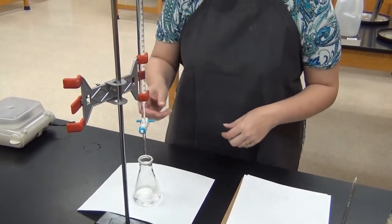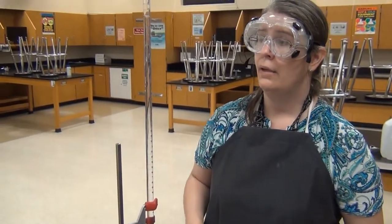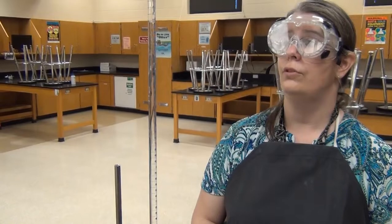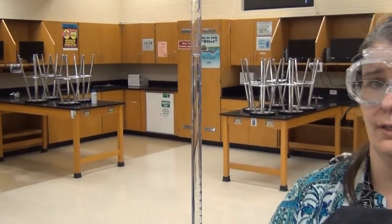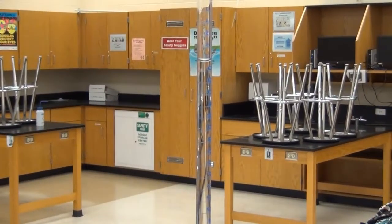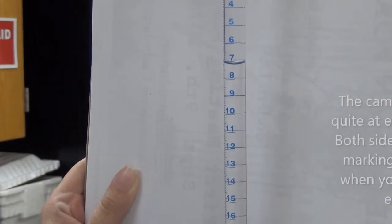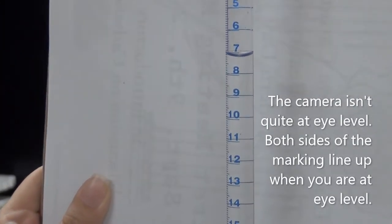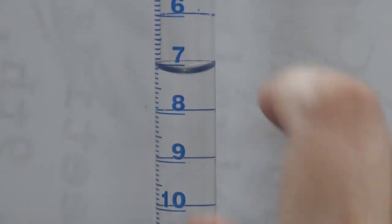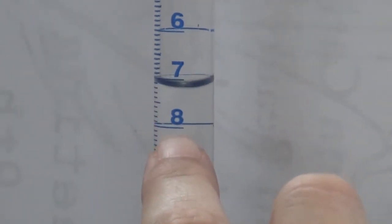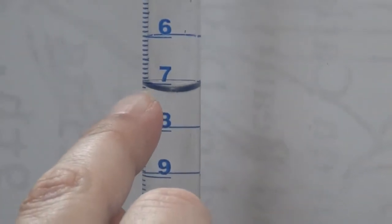Alright, so now we can start the titration, but we need to make sure we write down our initial volume of sodium hydroxide solution. I'm going to measure my starting volume of sodium hydroxide. I put some more into the burette so that we would have plenty for the titration, and again I'm in between the seven and eight milliliter lines, so I'm going to count down the tenths.